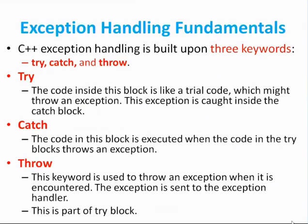In C++, exception handling is based on three keywords: try, catch, and throw. In the try block, the code inside is like trial code — this block will check for errors in the code written into the try block, which might throw an exception. If an error is generated, it might throw an exception. This exception is caught inside the catch block. Once some exception or error is generated at runtime, it will be thrown using the throw statement, and once it is thrown, it is caught in the catch block.